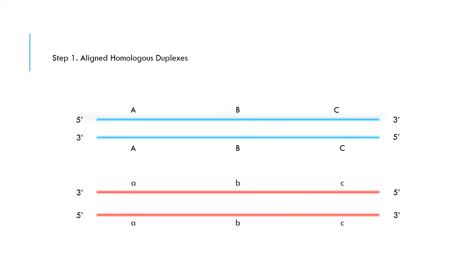Here we have two homologous chromosomes. This means they have the same genes in the same order along the chromosomal area. The top strand has all dominant genes and the bottom has all recessive. The sequence of genes is similar along both strands of DNA. Note the 5' to 3' directions of each strand.